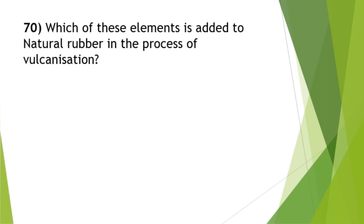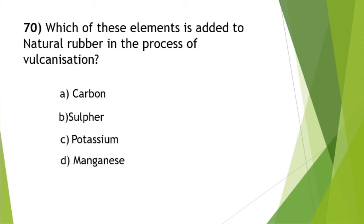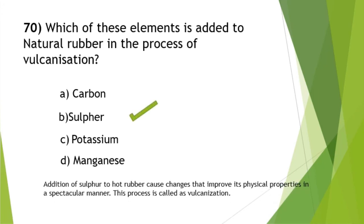Which element is added to natural rubber in the process of vulcanization? This is a basic but important question from polymer chemistry. The answer is option B — sulfur. Sulfur is added in the vulcanization reaction, and the process is called vulcanization.